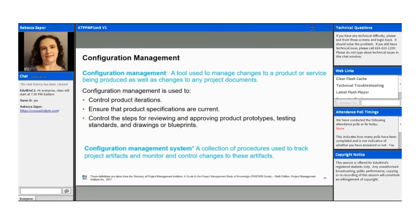Configuration management can have a subsystem called the change control system. When combined with integrated change control, configuration management provides a standardized and effective way to manage any approved changes and baselines within the project. Configuration control involves specifying deliverables and processes, while change control involves identifying, recording, and supervising changes to project baselines.